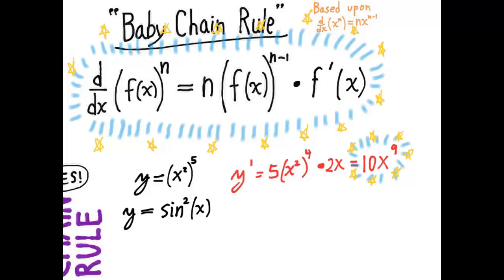Sine squared of x is not something that looks like it's in the form f of x to the n. But if you rewrite it this way, putting the exponent outside, then it might be easier to see how the baby chain rule applies.